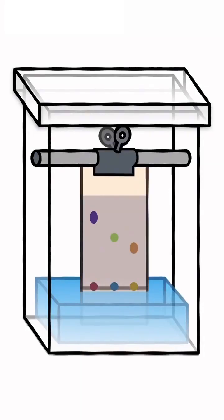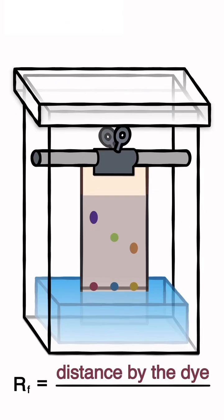Now, suppose you want to calculate the artifact of these dies. What you would do is, basically, the artifact is the distance moved by the die over the solvent, the distance moved by the solvent.